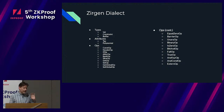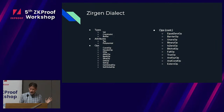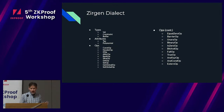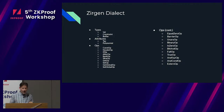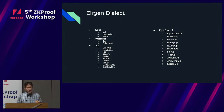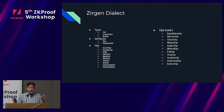This is the Zergen dialect. We have a set of types, attributes, and operations. There's fairly straightforward stuff like unary and binary ops — add, multiply, and so on. But then we have the EQZ and conditional operations, which help us combine different expressions into one big polynomial. And then there's the if op and constant op.